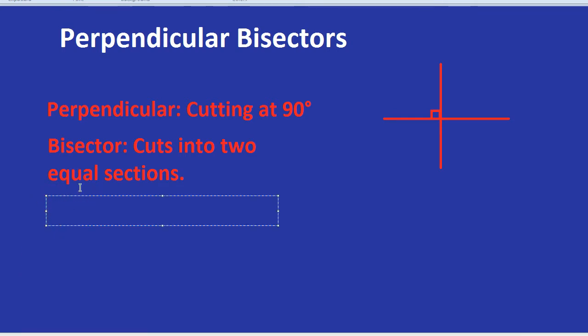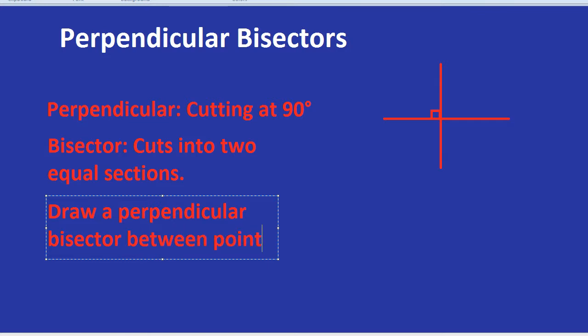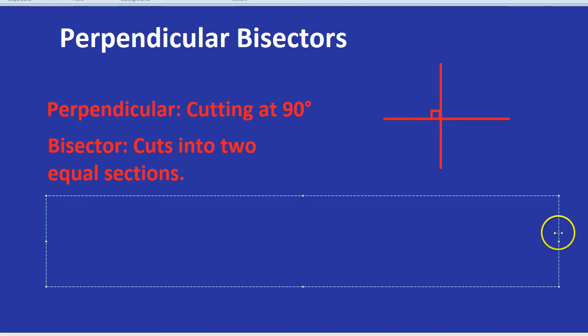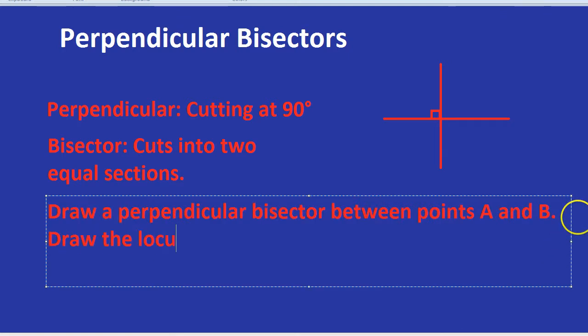It could be draw a perpendicular bisector between the two points, between point A and B. Or they might be more subtle. They might say something like this. Draw the locus of points equidistant from A and B. Equidistant just means equally distant from each point. In other words, the same distance from each point.